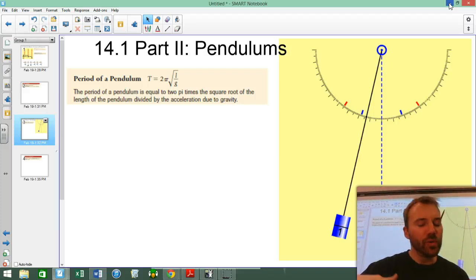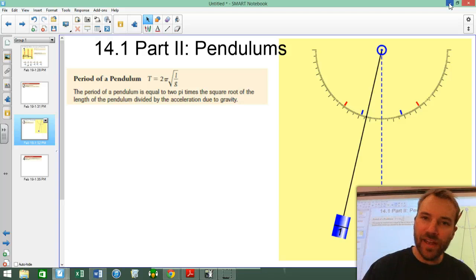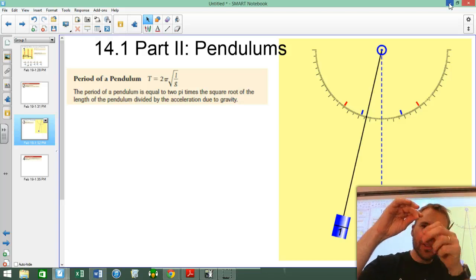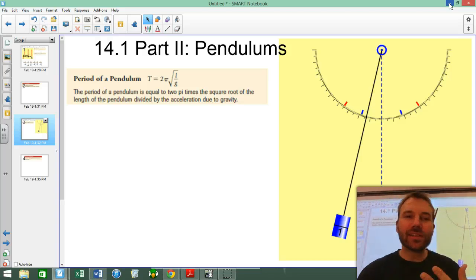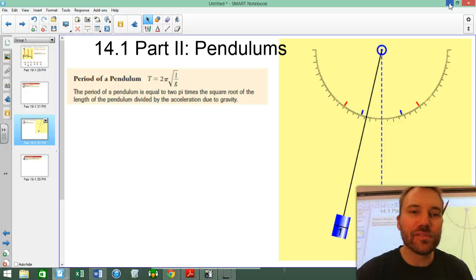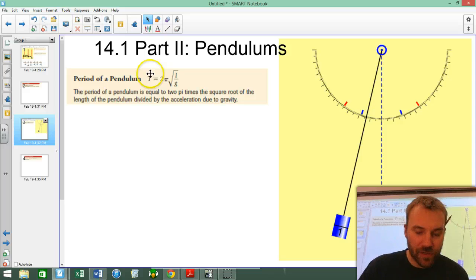The other thing, the only other way you can make a pendulum swing faster or slower, aside from altering the length, is to put it under a different amount of gravity. And you'll see this equation right here. Period equals 2 pi times the square root of L divided by G. L stands for length, G is gravity, T is period.